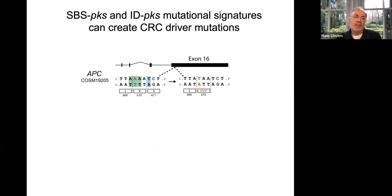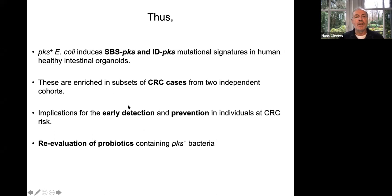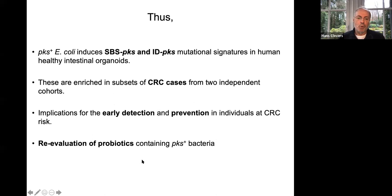These are random mutations that can occur anywhere in the genome, but they also target oncogenes and cancer genes. The APC gene in particular is a very good target for this mutational process, and many APC mutations in these cohorts bear the signature of colibactin — likely caused by pks+ E. coli sometime before the cancer developed. We think it would be wise to screen for pks+ E. coli and potentially eradicate it — easily done with antibiotics and a fecal transplant to restore a healthy microbiome. The use of pks+ E. coli as a probiotic should really not be continued.